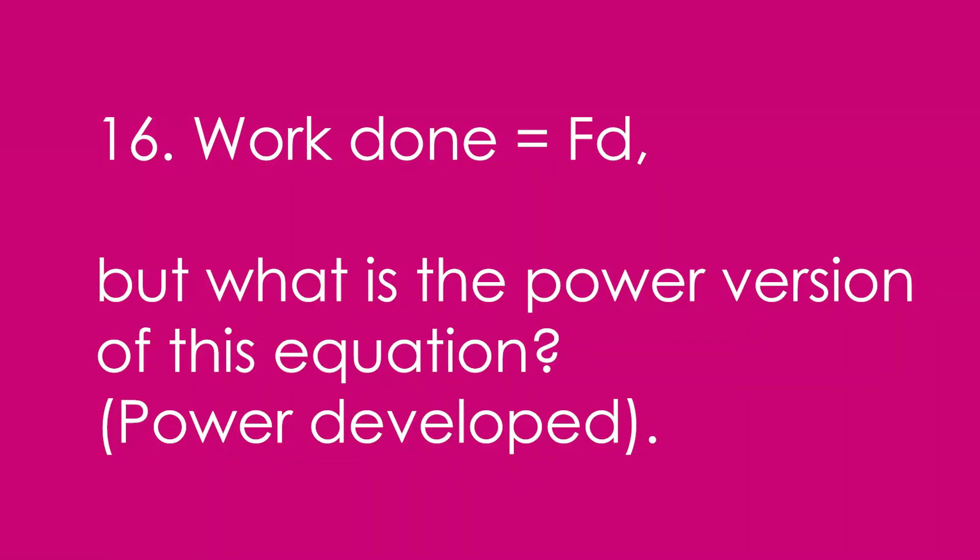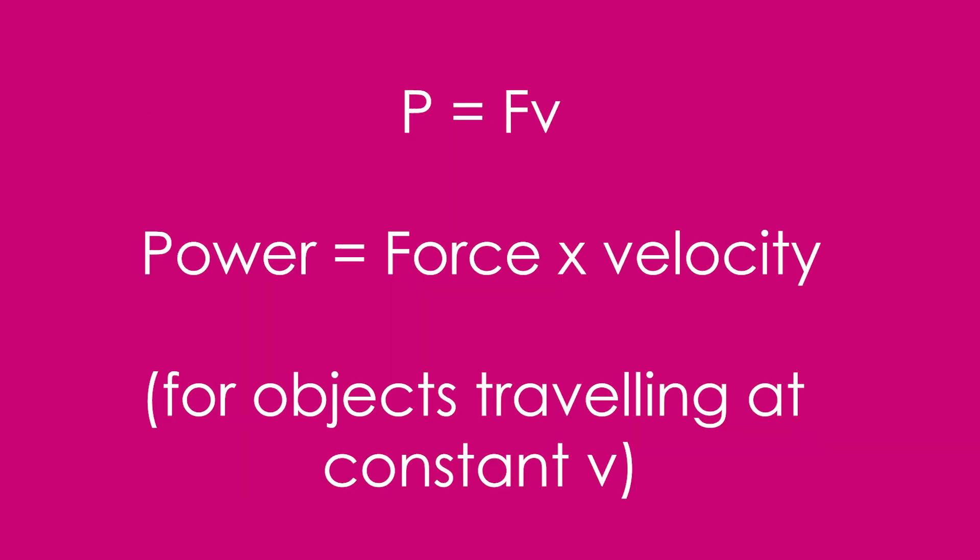16. Work done is equal to force times distance. But what is the power version of this equation? How is power developed linked to force? Power is equal to force times velocity. That's for objects travelling at a constant speed.